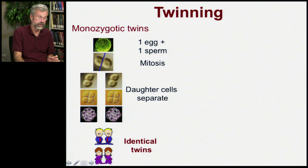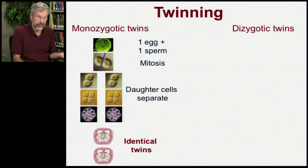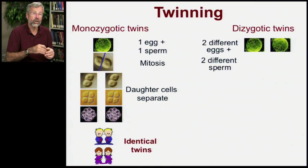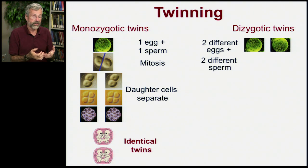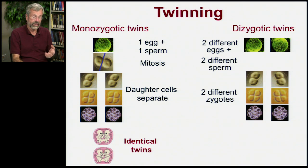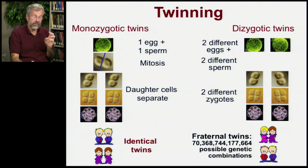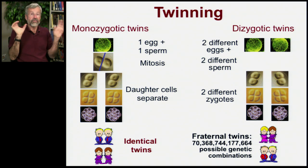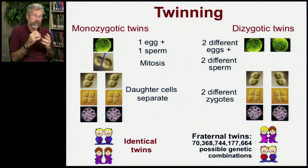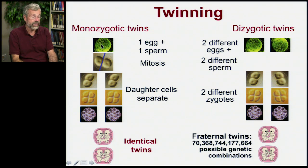More common are dizygotic twins, where at ovulation the mother releases two different ova, so there are two different eggs, and they're fertilized by two different sperm. They then undergo separate development with mitosis, but these are separate zygotes — these are fraternal twins, with a 1 in 70 trillion chance of being the same. So the actual process of twinning with monozygotic twins is something that happened after fertilization, to produce what are essentially clones.